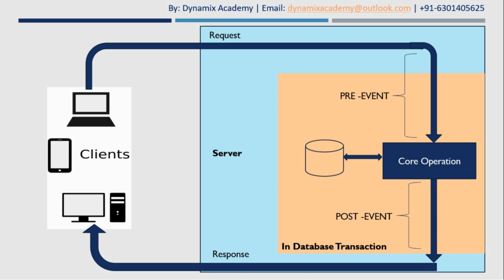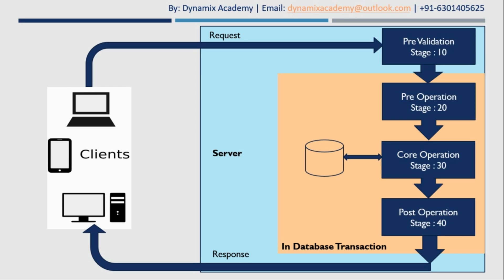This technology through which you can extend the functionality of the server is called the event framework. Dynamics 365 platform gives you the opportunity to modify the server functionality by registering your code before or after the main operation. The first place Dynamics 365 offers you to register your custom business logic is the pre-validation stage — before the database transaction has begun. That stage is called pre-validation.